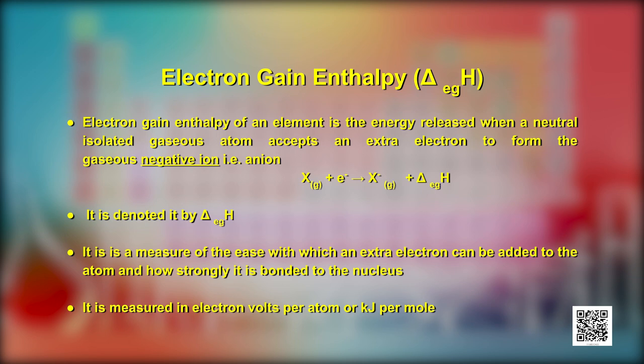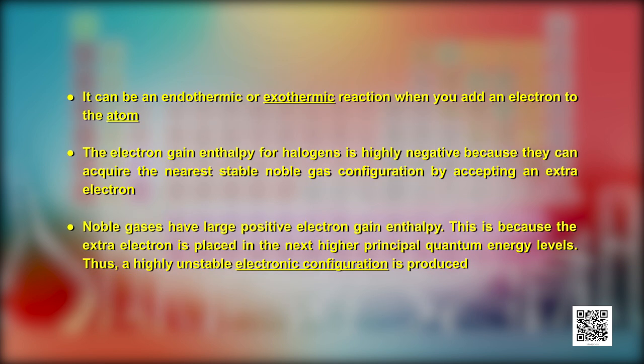Electron gain enthalpy is a measure of the ease with which an extra electron can be added to the atom and how strongly it is bonded to the nucleus. It is measured in electron volts per atom or kilojoules per mole. Depending on the element, the process of adding an electron to the atom can be either endothermic or exothermic. For many elements, energy is released when an electron is added and the electron gain enthalpy is negative.